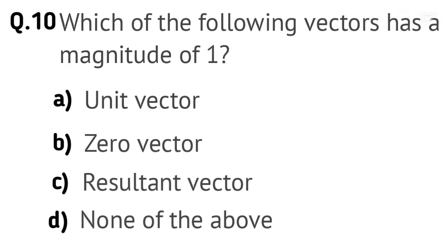Question 10. Which of the following vectors has a magnitude of 1? Options: A. Unit vector. B. Zero vector. C. Resultant vector. D. None of the above. Right answer is A. Unit vector.